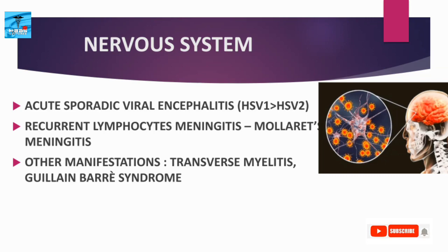Regarding nervous system involvement, encephalitis is the main manifestation. HSV is the most common cause of acute sporadic viral encephalitis, most frequently involving the temporal lobe. HSV1 is more common than HSV2 in nervous system infections. Children get primary infections, while adults get recurrent infections due to reactivation of HSV in the trigeminal nerve.